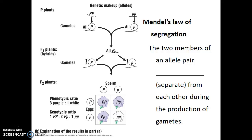The two members of an allele pair segregate — or separate — from each other during the production of gametes. It's this even separation of the two alleles, along with the random fertilization that happens during pollination, that gives us the F2 generation results. Looking at the four possible combinations of sperm and egg — with half the sperm being capital P and half being lowercase p, and half the eggs being capital P and half being lowercase p — three quarters of the offspring will look purple and one quarter will look white. In terms of genotypic ratios: one quarter homozygous dominant, one half heterozygous, one quarter homozygous recessive. In the next video we'll see how to use the law of segregation to answer questions about predicted probabilities of genetic crosses.